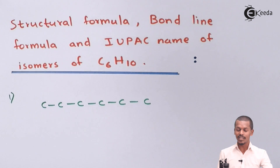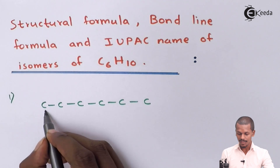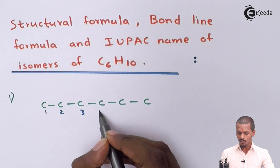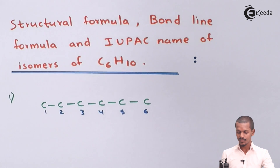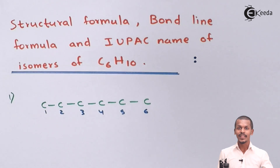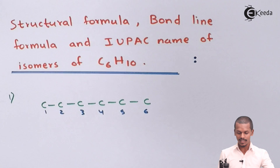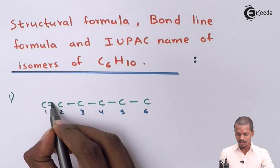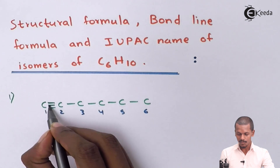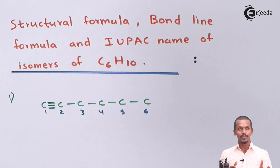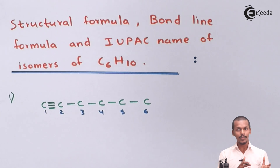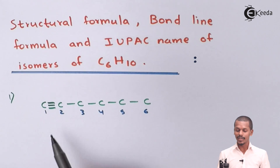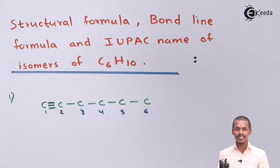Six carbon atoms are in a straight chain, numbered 1 through 6. For the first isomer, the carbon-carbon triple bond is between carbon number 1 and carbon number 2, and the rest are single-bonded carbon atoms. So we have CH≡C-CH2-CH2-CH2-CH3 as the structural formula.